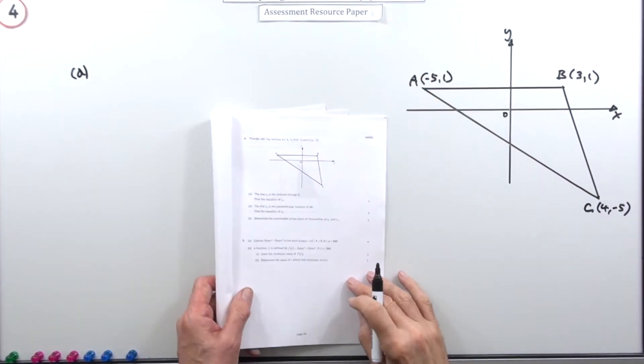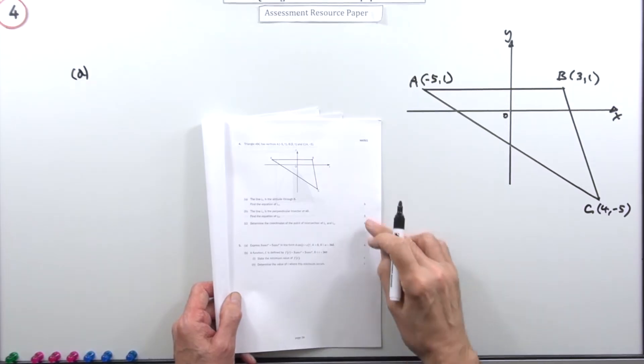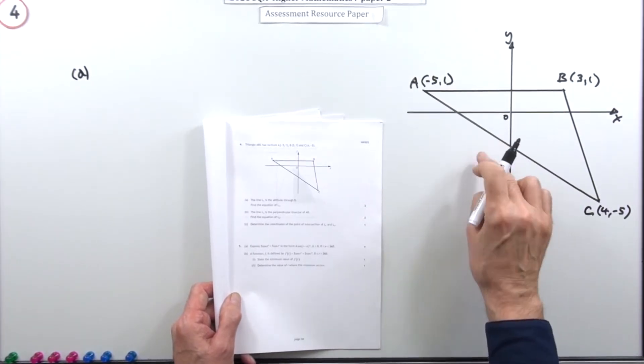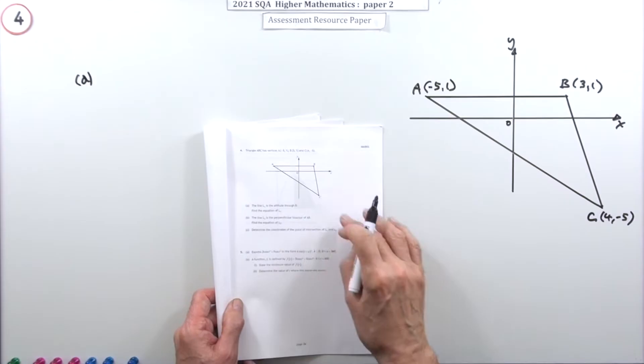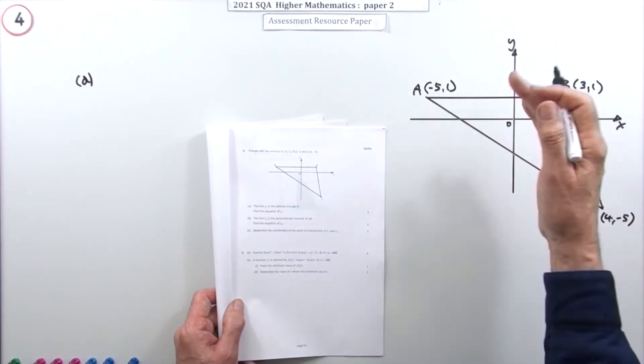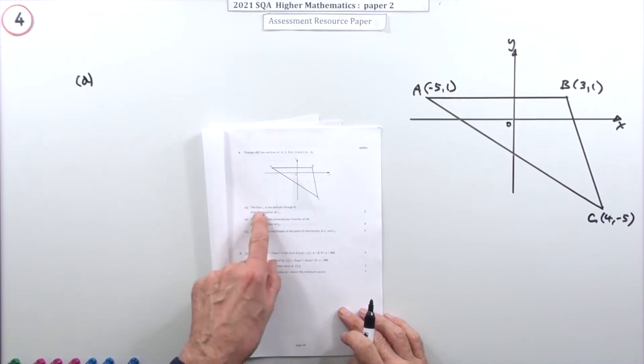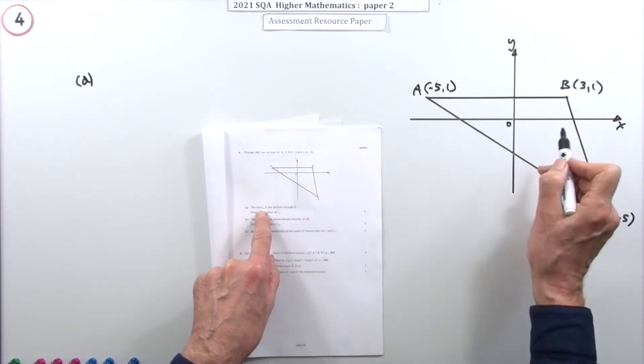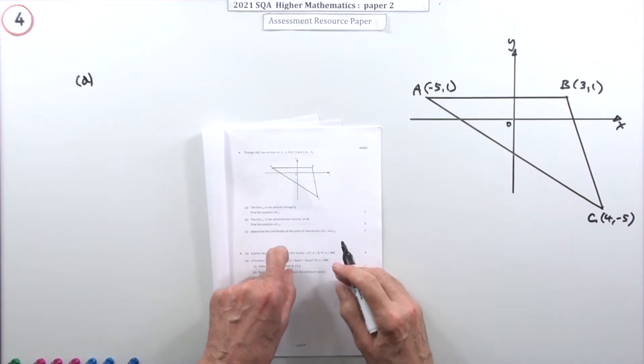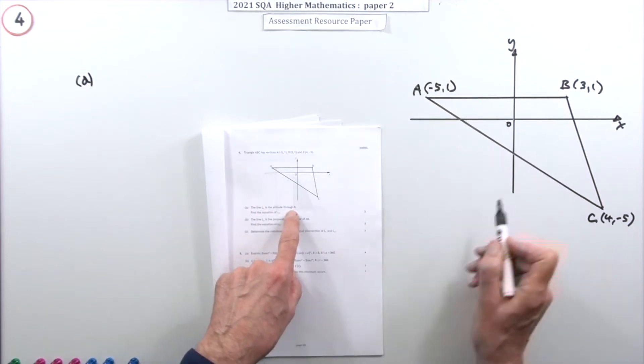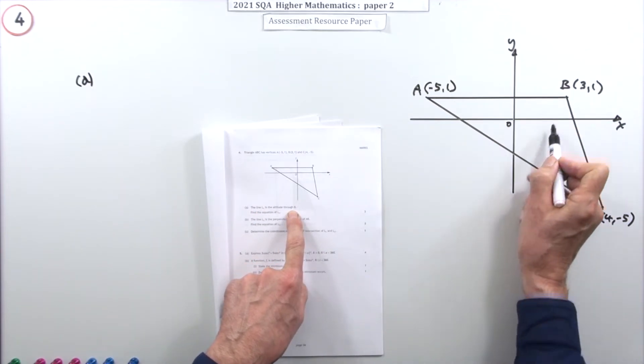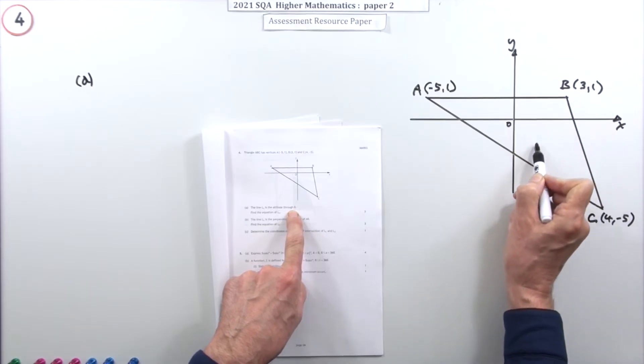Question 4 from Paper 2, the 2021 Higher Math resource paper. Seven marks for lines in a triangle - the usual one, find one type of line, another type of line, and then a point of intersection. Part A says line L1, which is not shown here so you have to construct it yourself, is the altitude through B, which means it comes from B to the opposite side and meets it at right angles.